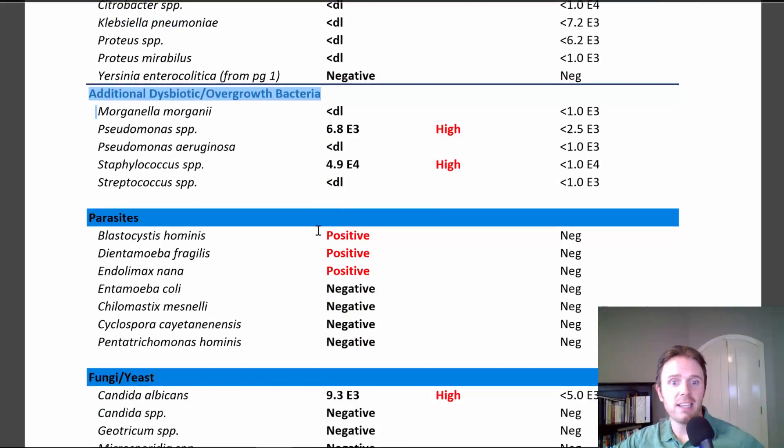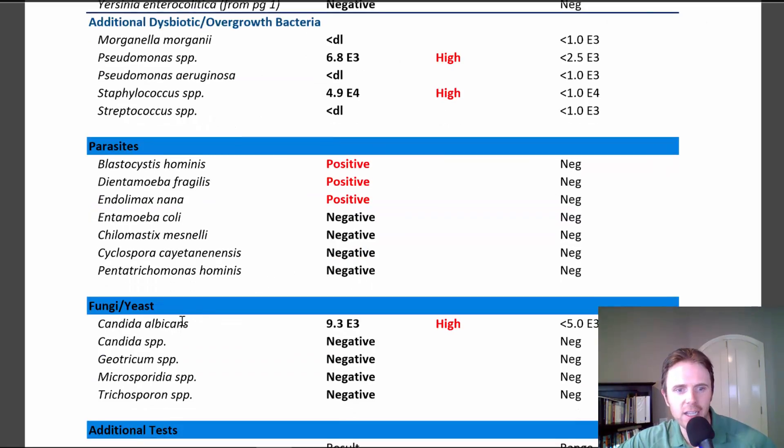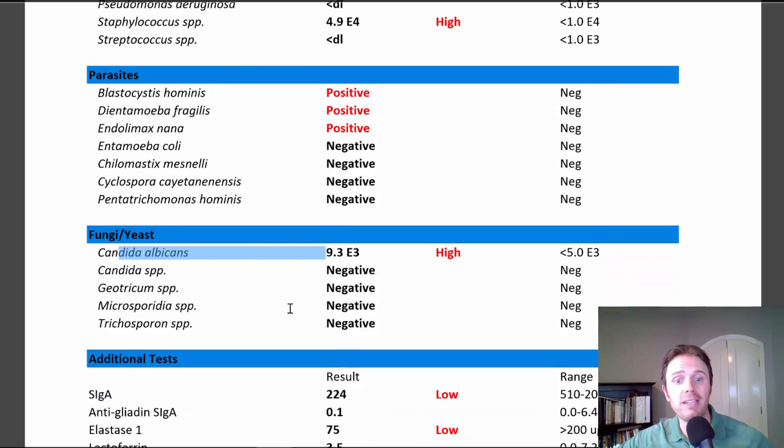Go down a little bit further. Look at this. We got the trifecta. Blasto, Dientamoeba Fragilis and Endolimax Nana. And we go a little bit lower, there's also Candida. So we got a bacterial overgrowth. We have three parasitic infections, not one, not two, but three. Blasto, Dientamoeba and Endolimax Nana. We have Candida albicans and we have low beneficial bacteria.